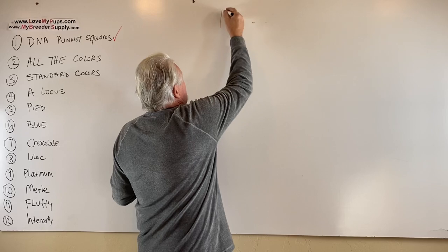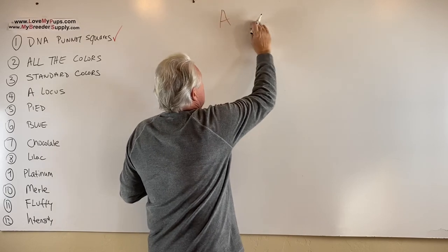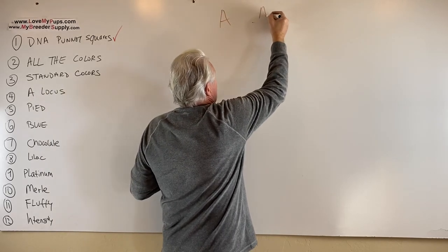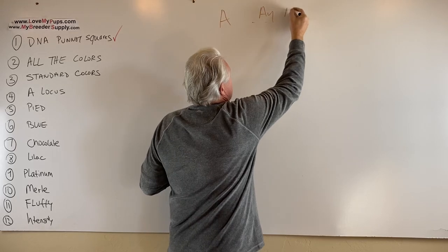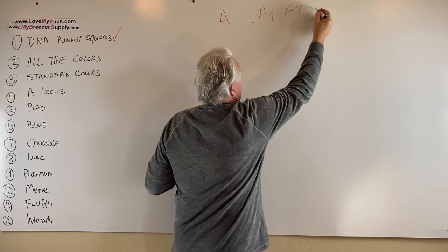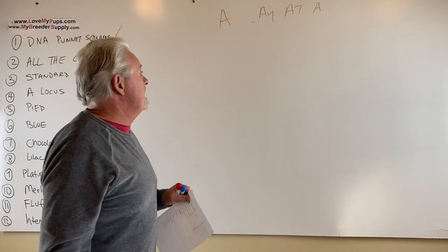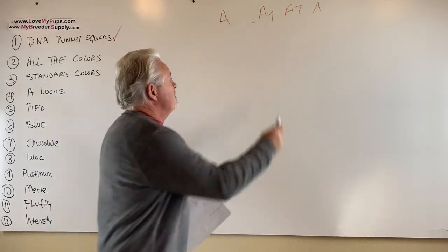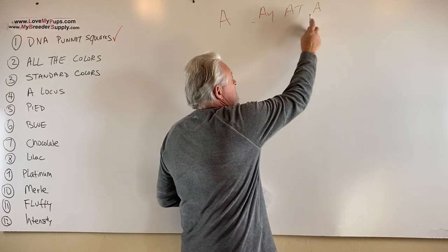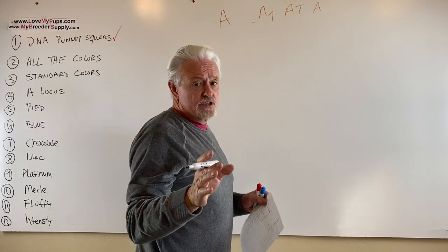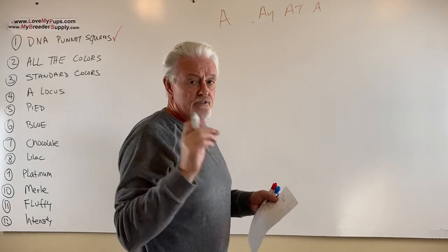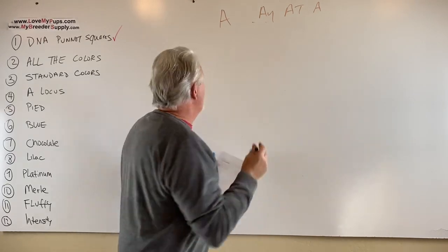Okay, so we have the A locus. And in the A locus, you can have AY, AT, and A. There's three possibilities that you can see on the A locus. And these are to do with fawns, tan points, and recessive black. I'm not going to go into any of these in any detail here. We're going to do another video specifically on each of these.